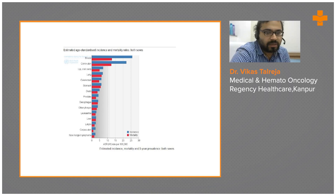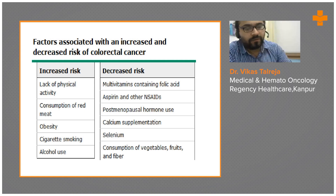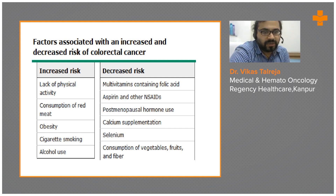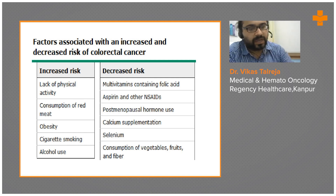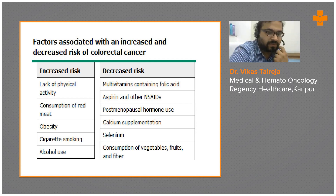Looking at both sexes combined, it still ranks fourth in incidence. The increased risk factors for colorectal cancer include lack of physical activity, consumption of red meat, obesity, cigarette smoking, and alcohol use. Decreased risk is associated with multivitamins containing folic acid, aspirin, NSAIDs, postmenopausal hormone use, calcium supplementation, selenium, and consumption of vegetables, fruits, and vegetable fibers.